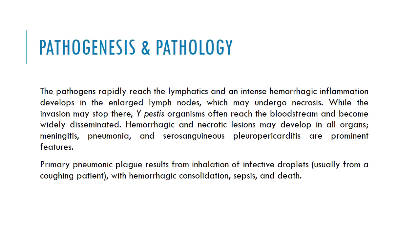The dissemination of the bacteria occurs when the bacteria reach the bloodstream. Hemorrhagic and necrotic lesions may develop in all organs; meningitis, pneumonia, and serosanguinous pleuropericarditis are prominent features of the disease. Primary pneumonic plague results from inhalation of infected droplets, usually from a coughing patient with hemorrhagic consolidation, sepsis, and death. Pneumonic plague differs from the plague transmitted by a flea infected with Yersinia pestis from rodents, as it results from inhalation of infected droplets from patients.